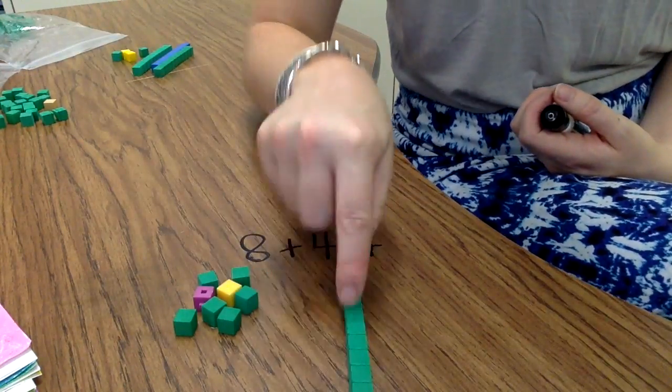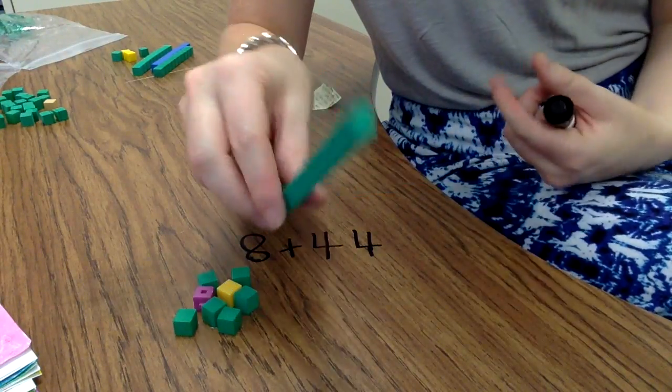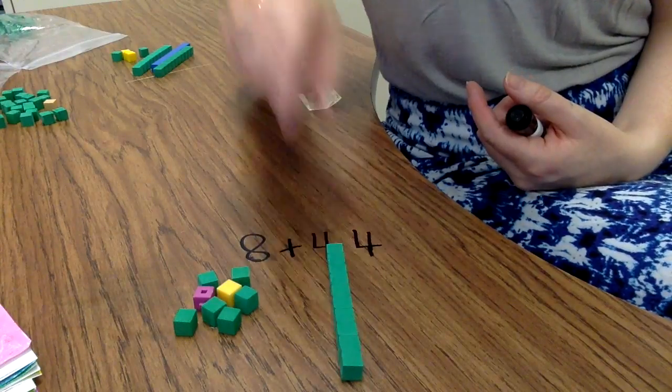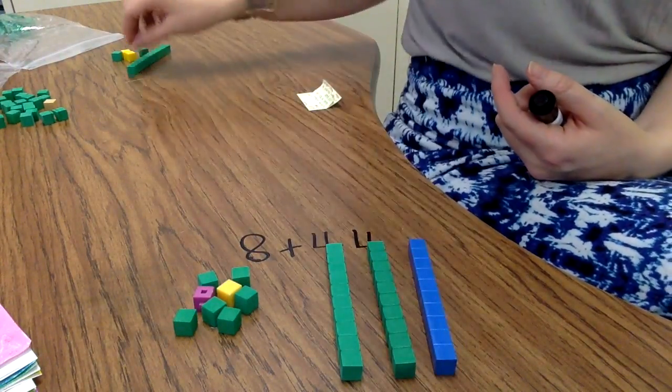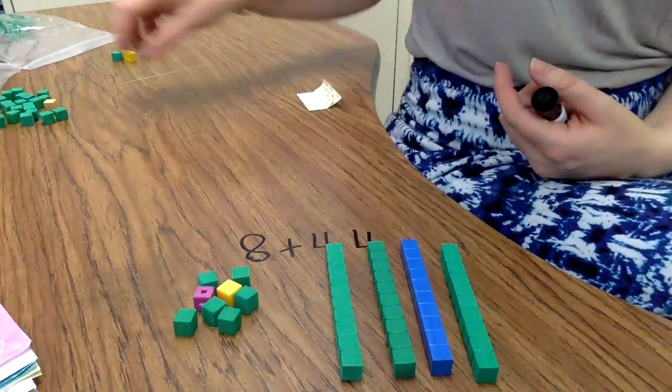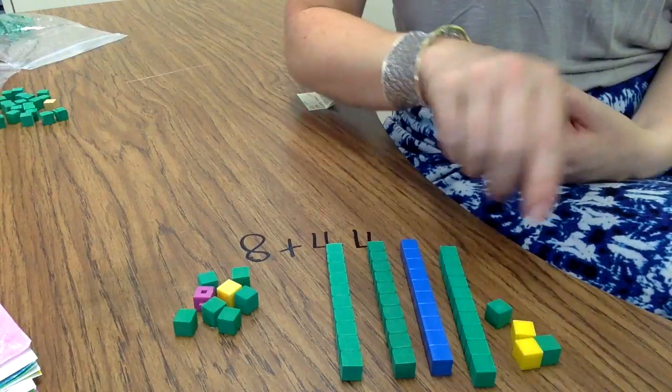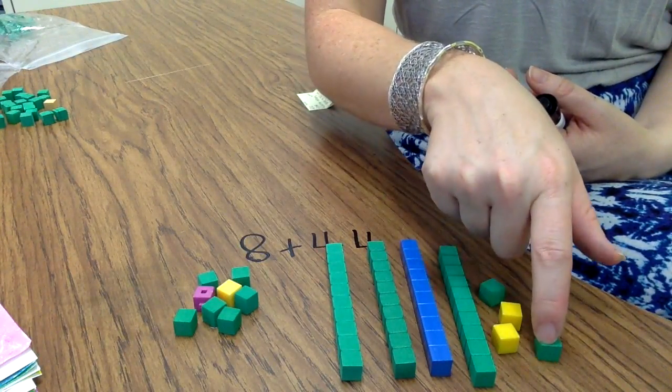This is called a rod. It has 10 little units all connected so it represents 10. And 44 has 4 tens. So I would show 10, 20, 30, 40. I've got my 4 tens and then I would need the 4 ones right here. So there's 10, 20, 30, 40, 41, 42, 43, 44.